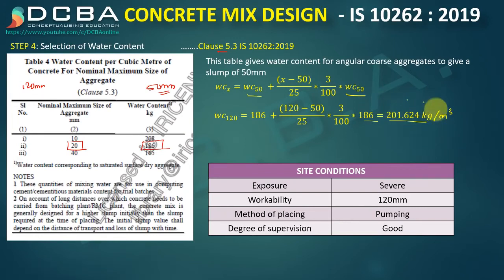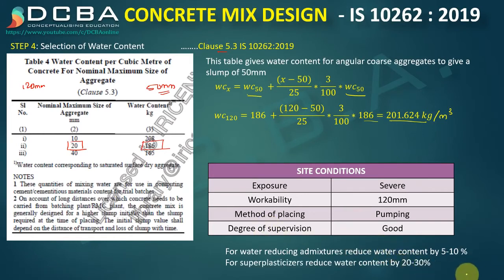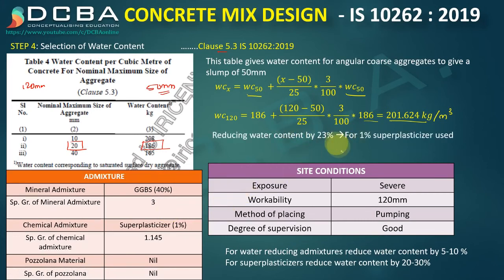Clause 5.3 also states that for water-reducing admixtures, water content should be reduced by 5–10%, and for superplasticizers, by 20–30%. We are using a superplasticizer at 1%, and based on site trials it has been found that approximately 23% water reduction is achieved. This reduction will vary by brand and specification of superplasticizer.